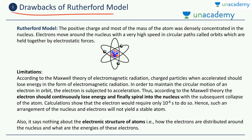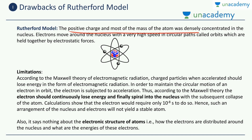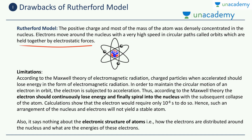The first topic is the drawbacks of the Rutherford model. The Rutherford model was not totally sufficient in describing all the different phenomena observed by scientists. As a revision: the Rutherford model says the positive charge and most of the mass of the atom is densely concentrated in the nucleus at the center, and electrons move around the nucleus at very high speeds in circular paths called orbits, held together by electrostatic forces between the protons and the electrons.